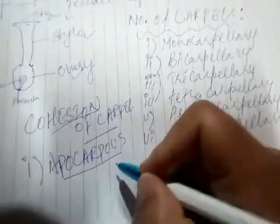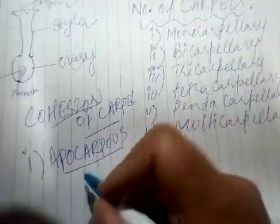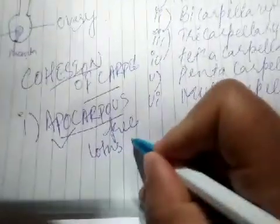The first is called apocarpus. Apocarpus means when two or more carpels are present and they are free. If two or more carpels are present and they are free, the condition is called apocarpus, which is seen in case of lotus and rose.